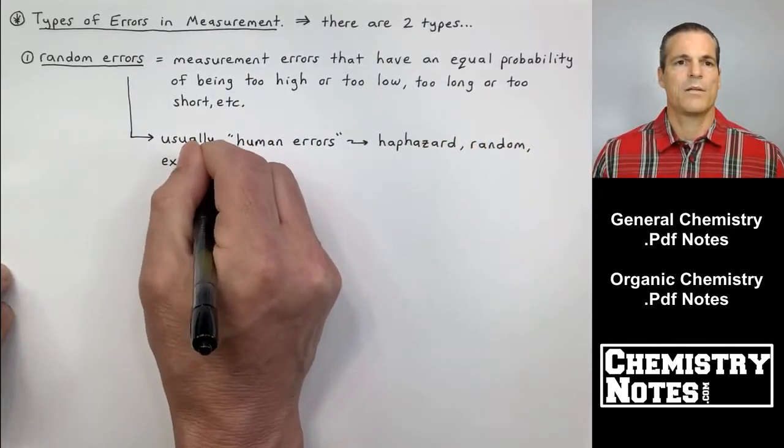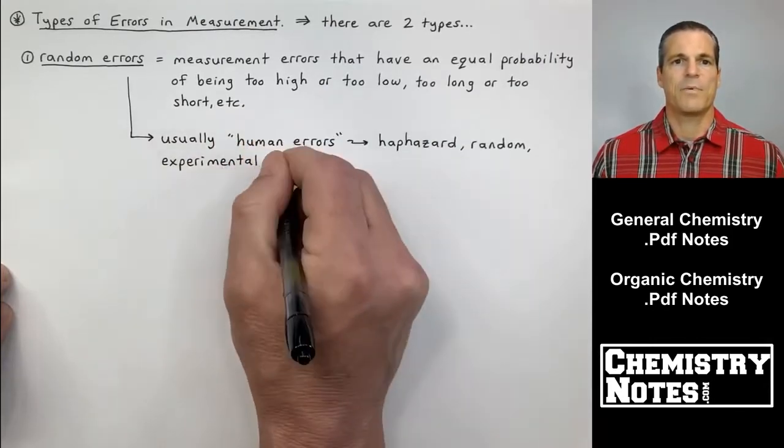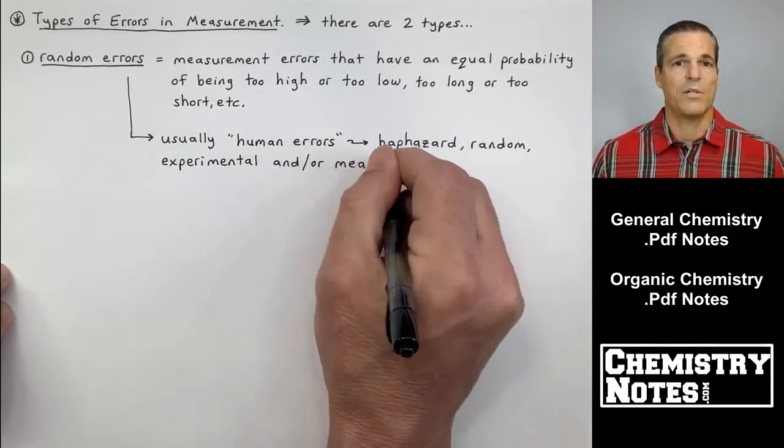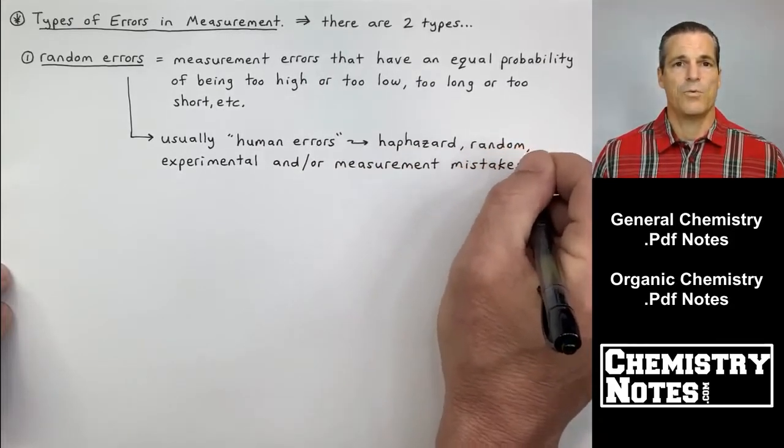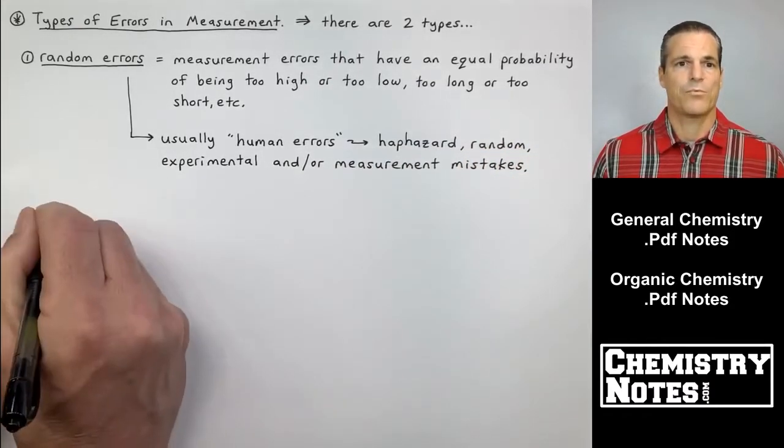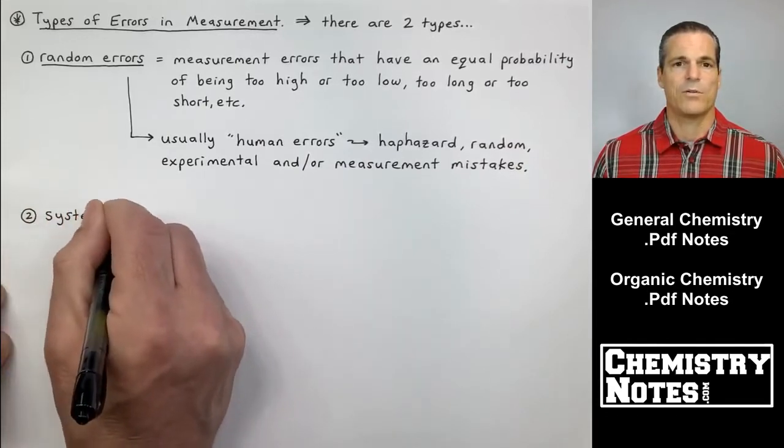Let's take a look at number one. Random errors. Measurement errors that have an equal probability of being too high or too low, too long or too short. These are usually human errors. They're haphazard, random, experimental, and or measurement mistakes.